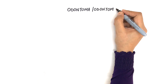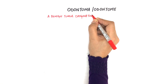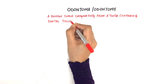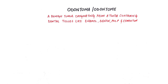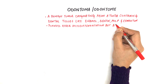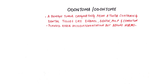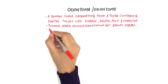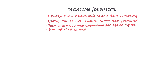Odontoma, also known as odontome, is a benign tumor originating from dental tissues like mature enamel and dentine with variable amounts of pulp and cementum. They are formed after the stage of histodifferentiation but before the stage of morphodifferentiation during the bell stage of tooth development. Odontomas are slow-growing lesions composed of well-differentiated normal tissues that have grown in a disorganized pattern. That's why they are called hamartomas, meaning they are not true tumors, because a true tumor is a mass of abnormal tissues whose growth exceeds and is uncoordinated with that of normal tissue.